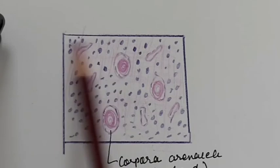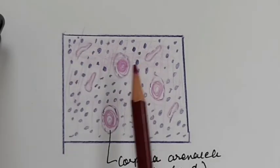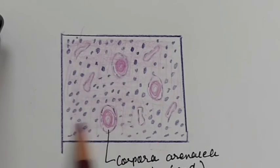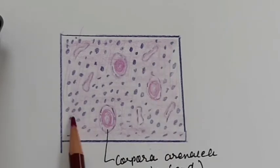The supraoptic nucleus of the hypothalamus provides communication between the retina and the pineal gland.